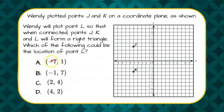We're given four choices for that point L. So let's put all of these on our coordinate plane so we can form a right triangle. The choices are: (-7, 1), (-1, 7), (2, 4), and (4, 2).